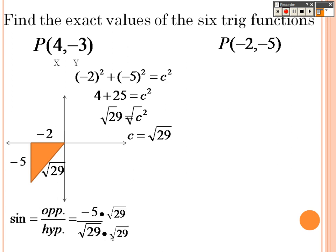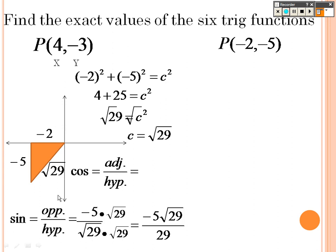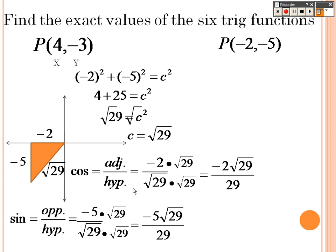But you can't have square roots in the denominator, so it's negative 5 root 29 over 29. Cosine is adjacent over hypotenuse — negative 2 over root 29, but again you can't have square roots in the bottom, so it's negative 2 root 29 over 29. Tangent is opposite over adjacent, which is negative 5 over negative 2, which is positive 5 over 2.